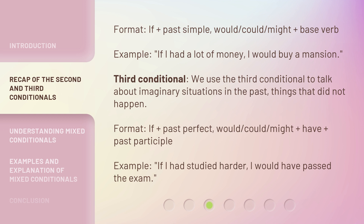Third conditional: we use the third conditional to talk about imaginary situations in the past — things that did not happen. Format: if plus past perfect, would, could, or might plus have plus past participle. Example: If I had studied harder, I would have passed the exam.